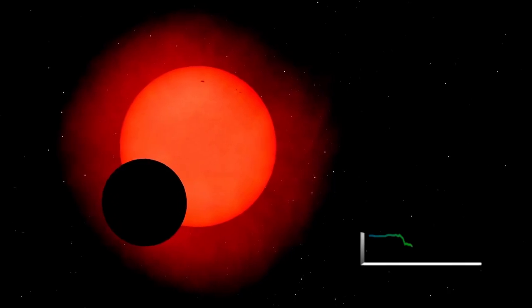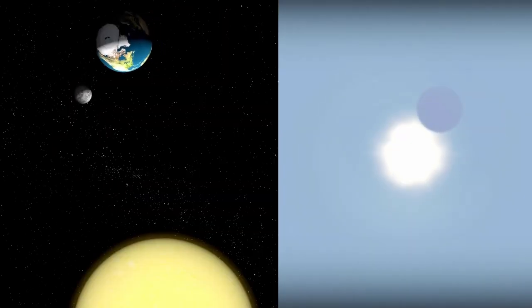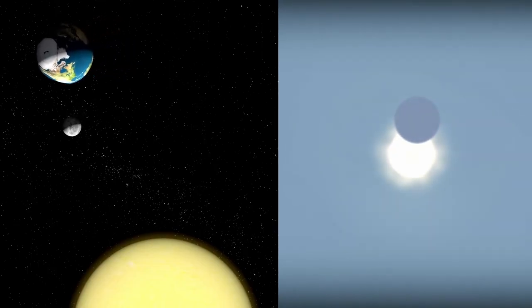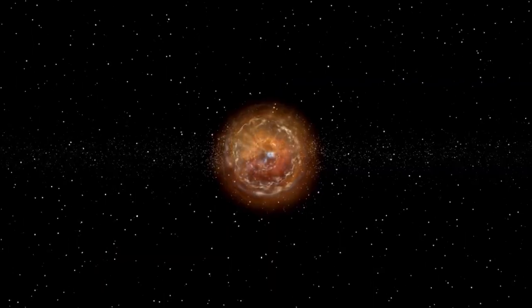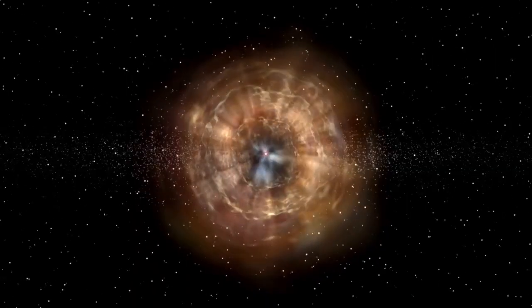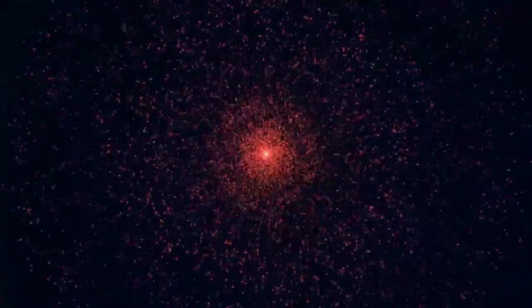Its trajectory is equally unsettling, perfectly aligned with the plane of our planets, as if it were tracing the invisible clockwork of our solar system. Natural objects don't do that. They drift, they fall, they spiral. But this one follows the path of precision. Was it designed? That question now echoes through the corridors of every major observatory on Earth.